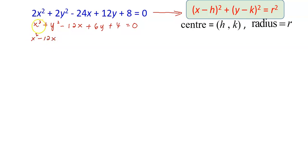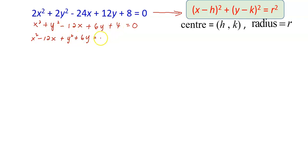First, I have the term x² and the second term is −12x, so the terms containing x go together. Now for the y terms, y² and 6y are put together. And the constant we can always move to the right-hand side. After that, I'm going to focus on these two terms: x² − 12x.